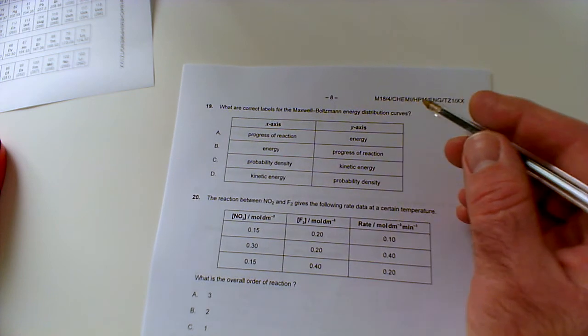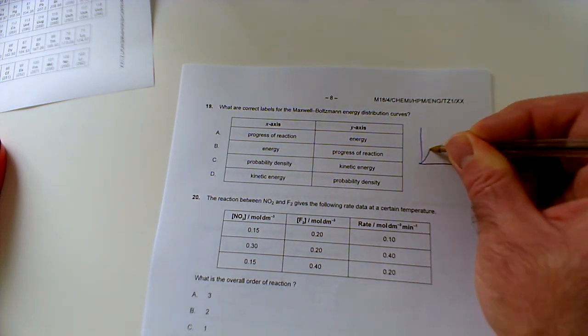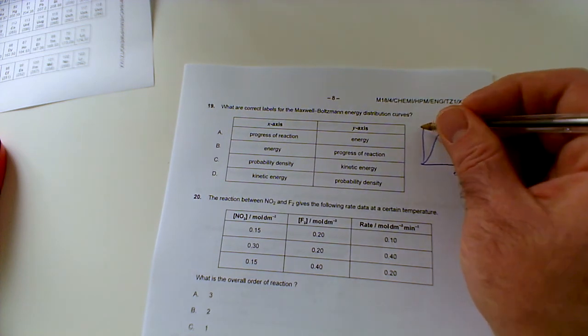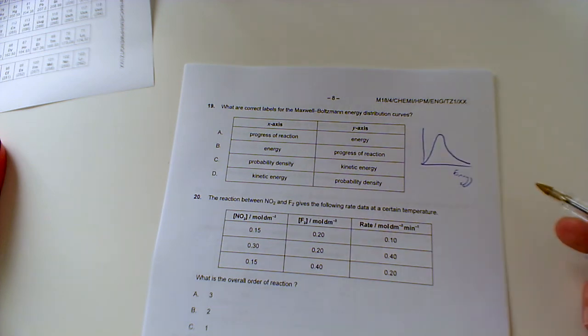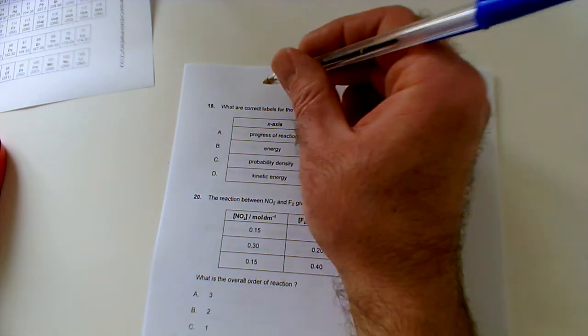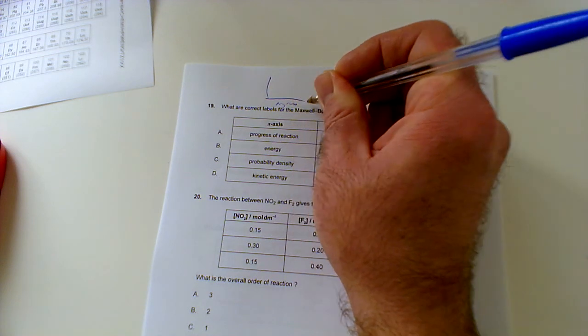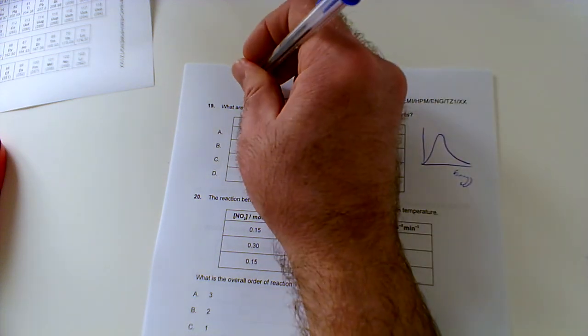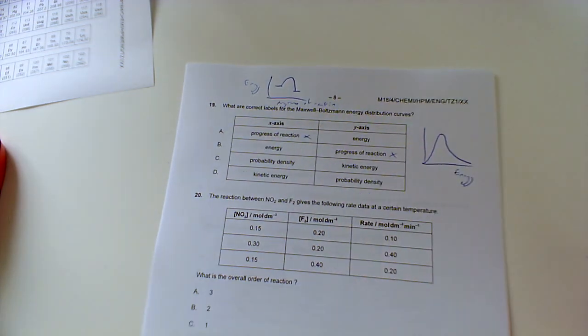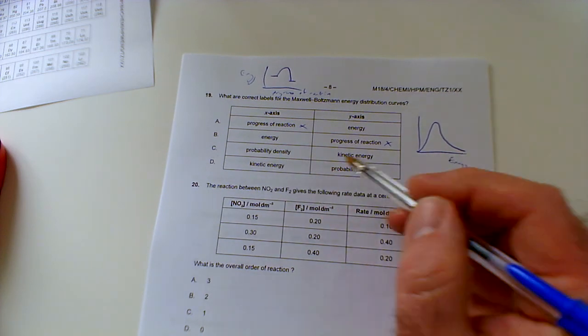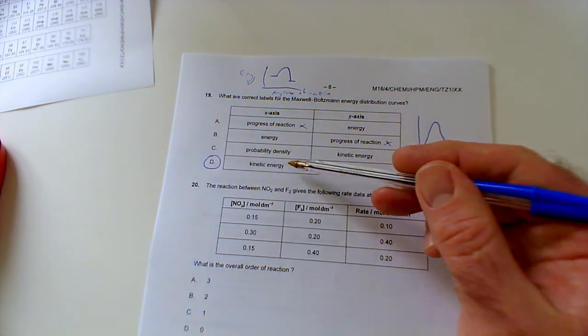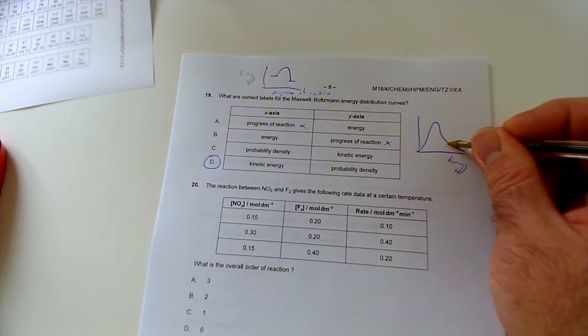Number 19: what are correct labels for the Maxwell-Boltzmann distribution energy curves? Remember that's the one where it kind of goes up and then it comes back down but never touches the origin again. So what we're looking at is energy on the x-axis and then we normally say number of particles, but the number of particles isn't shown, and yet kinetic energy is fine. This one, they're kind of confusing, but you don't want progressive reaction. Progressive reaction would be whether confusing it with energy profile diagrams where you know, progressive reaction and then you'd have energy, and that'll be when you're showing whether something is, let's say, exothermic for example. So I'm not liking these ones with the progressive reaction.